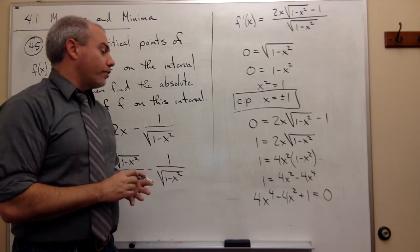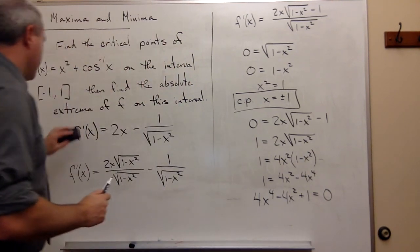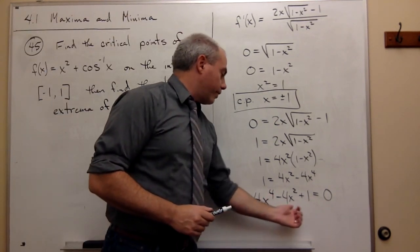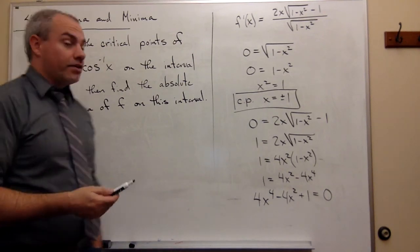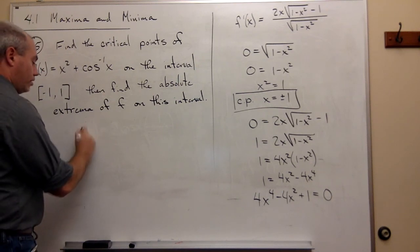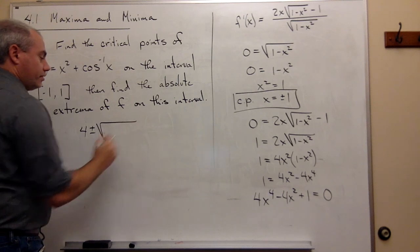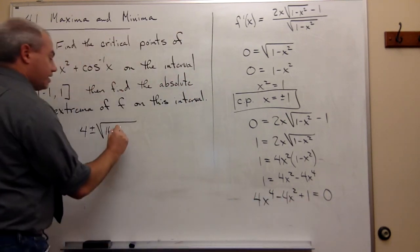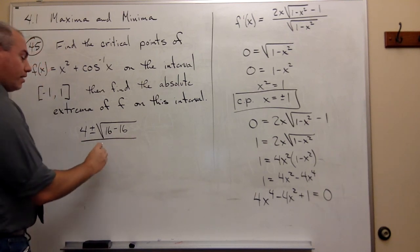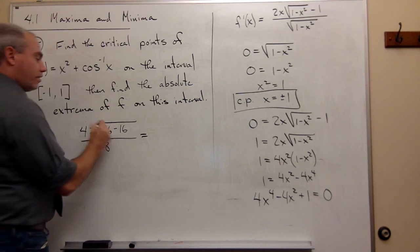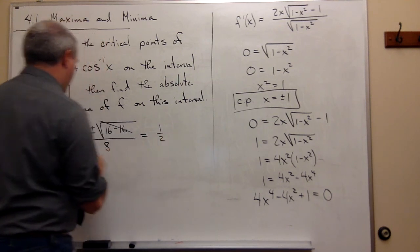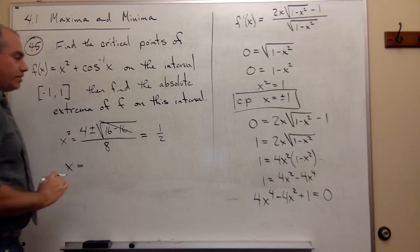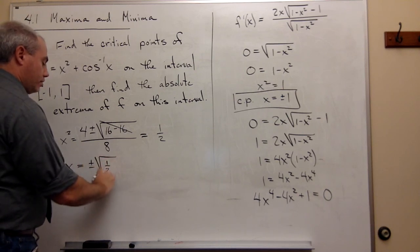This is a quadratic equation in x squared. Using the quadratic formula: x squared equals negative b (which is 4) plus or minus the square root of b squared (16) minus 4 times a times c (which is 16), all over 2 times a (which is 8). Since 16 minus 16 is zero, we just get 4 over 8, or one half. So x squared equals one half, meaning x equals plus or minus the square root of one half.